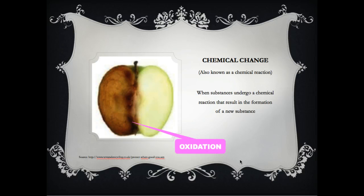Another example of chemical change is when we see iron turn into rust — we can't turn the rust back into the iron. We also have tarnishing, and we have instances when something is actually burning. We have other examples like a precipitate, when you take two liquids, mix them together, and they form a solid. These are examples of chemical changes and how they're different from physical changes.